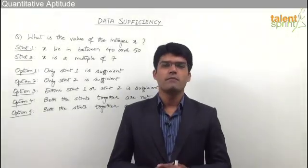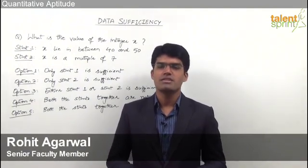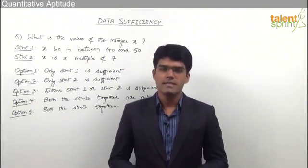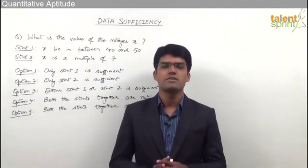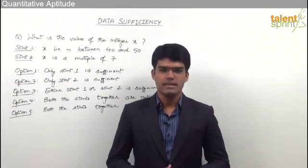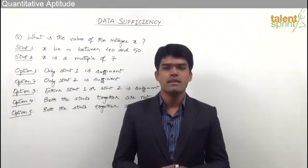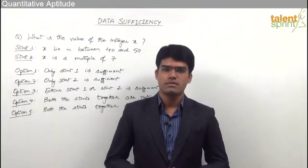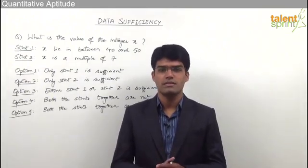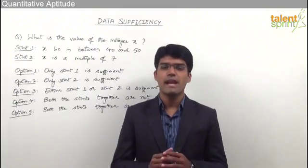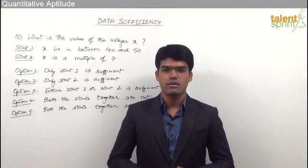Hi friends. In this session we are going to discuss an important topic from quantitative aptitude which is data sufficiency. Generally in data sufficiency a question is given followed by two statements and we have to check the sufficiency of the given data. That is we need to find out whether one of the two statements or both the statements together will be sufficient to answer the question or not. In most questions from data sufficiency we need not solve the question and find out the exact answer, but we only have to check whether the given statements will be sufficient to get the answer.